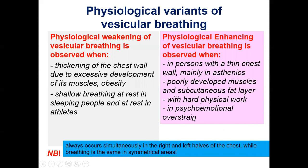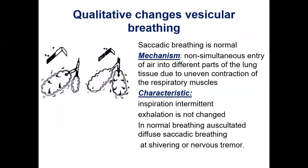If you detect weakening of vesicular breathing in one area but not in the symmetrical area — for example, in one lobe but not in the opposite part — those changes are not physiological but pathological. For example, they may represent pneumonia.